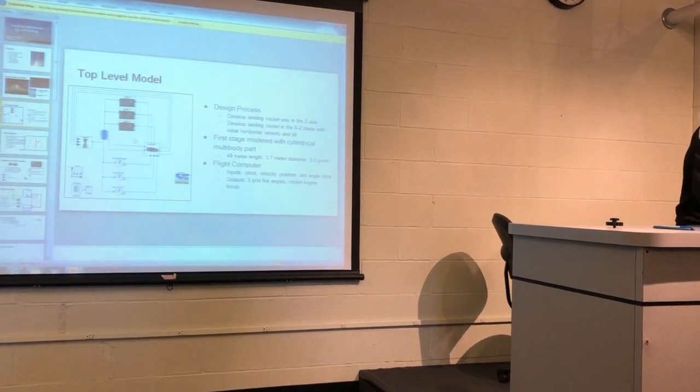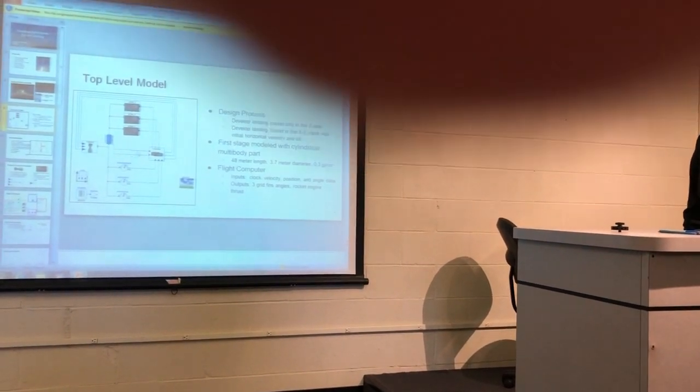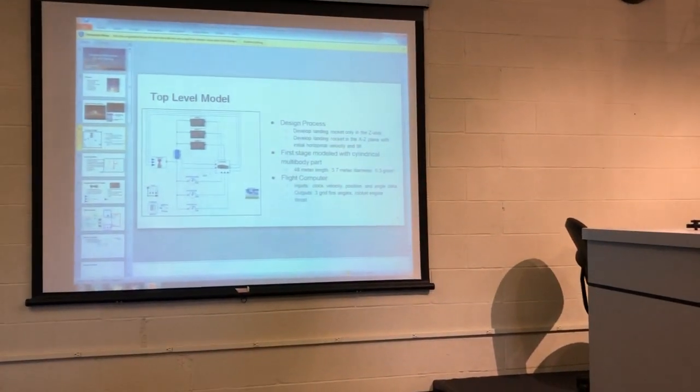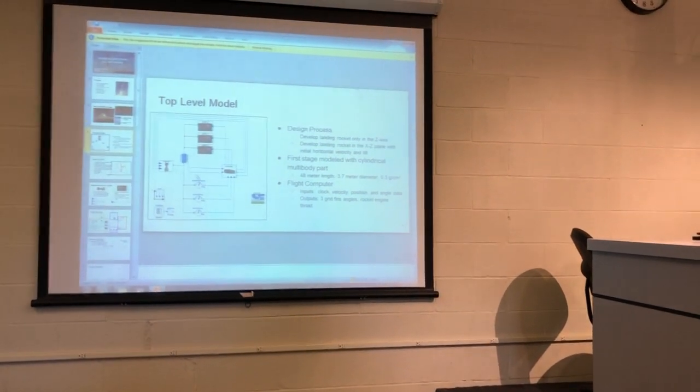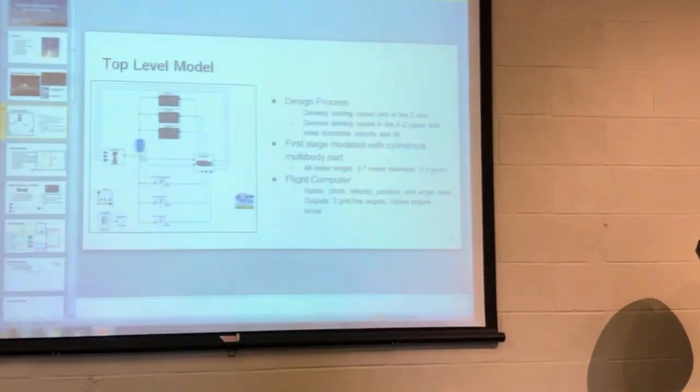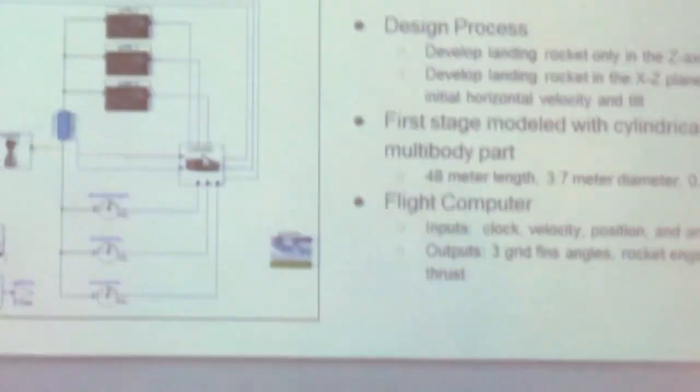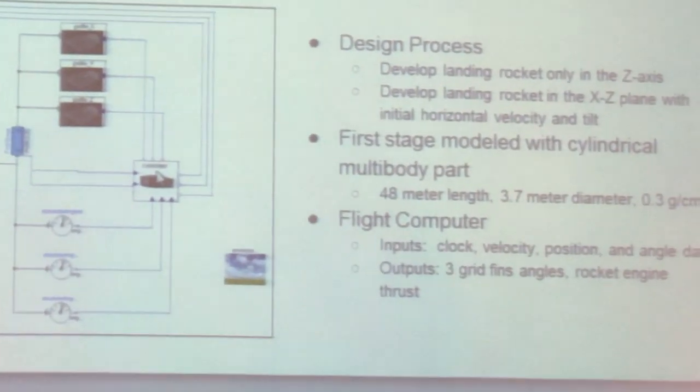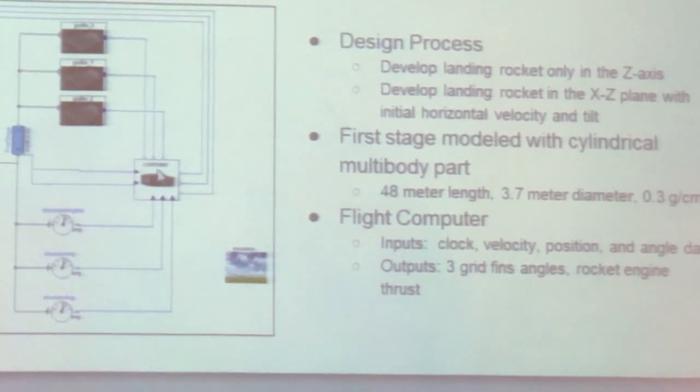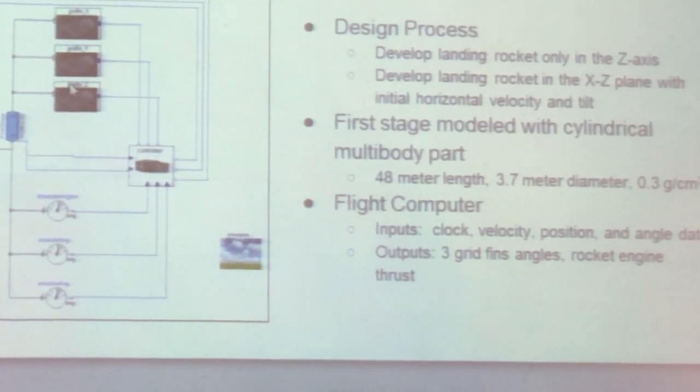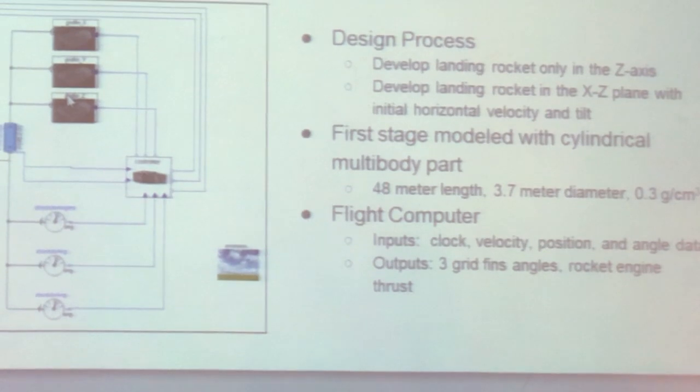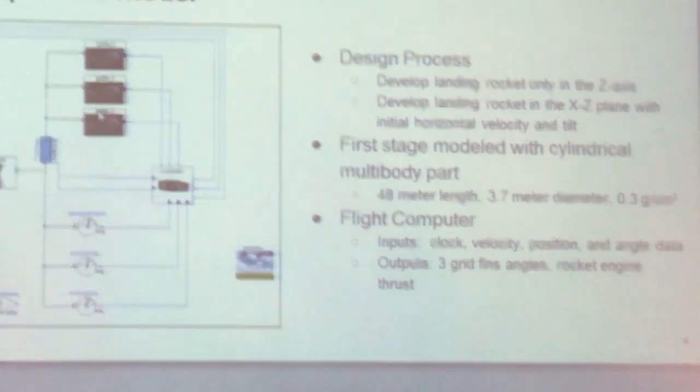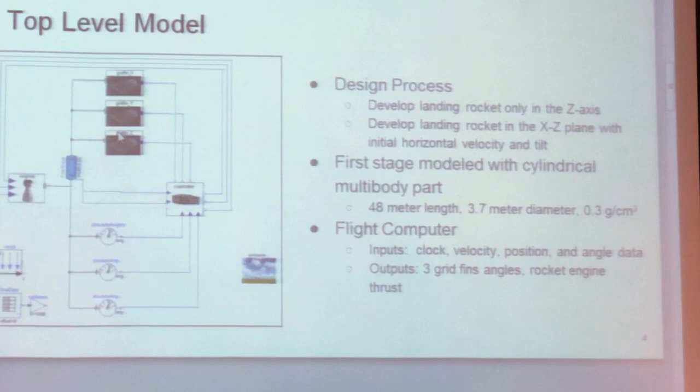In general structures I have this flight computer which takes in data, velocity, angle, and position data from the booster core, and basically crosses that information and sends it out to either the grid fins or the engines. And that basically puts forces and torques on this first stage and controls it back to this landing path.